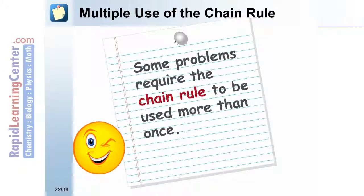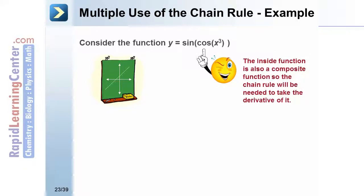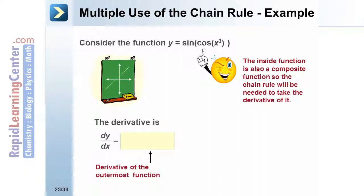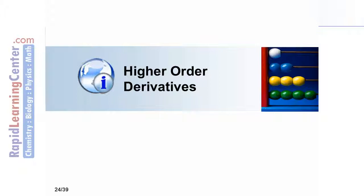Some problems require the chain rule to be used more than once. For example, consider y equals the sine of the quantity cosine of the quantity x cubed. The inside function is also a composite function, so the chain rule is needed more than once. The derivative dy/dx equals the derivative of the outermost function times the derivative of the cosine of x cubed times the derivative of the innermost function, giving cosine of the cosine of x cubed times negative sine of x cubed times 3x squared. In this section, we will next discuss higher order derivatives.